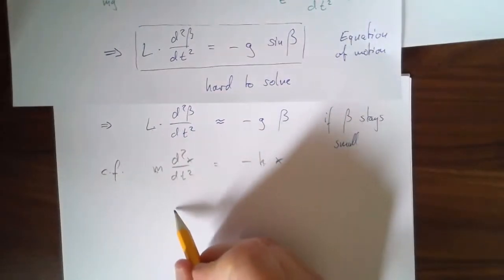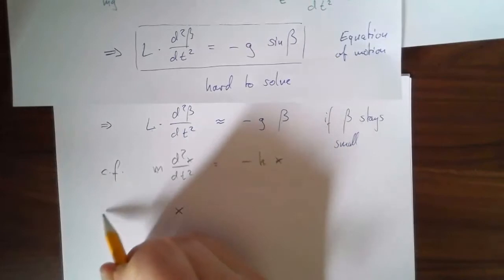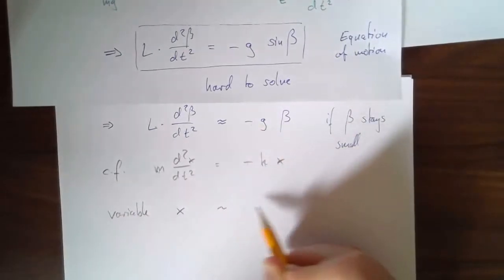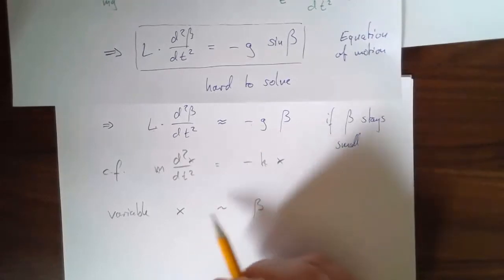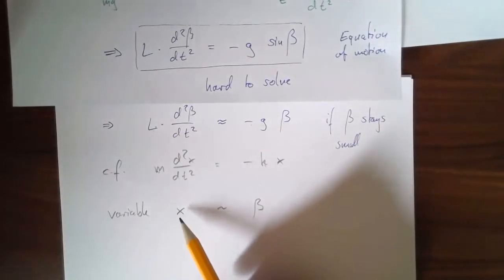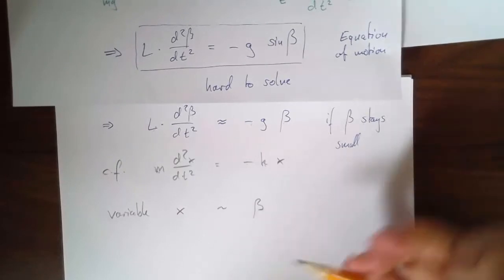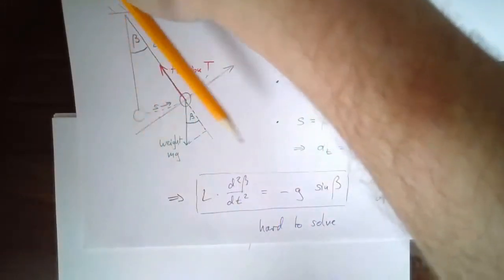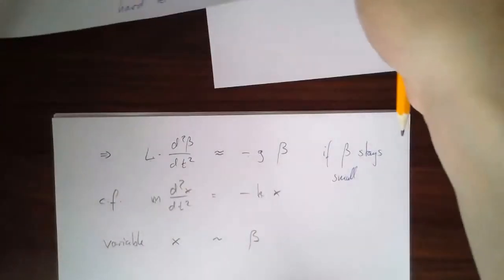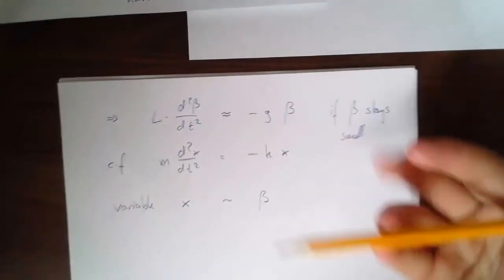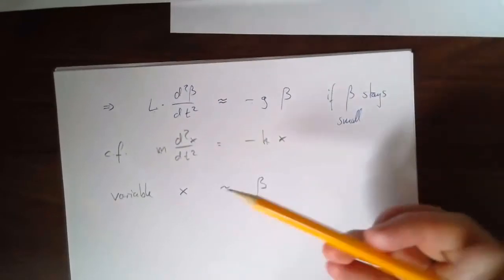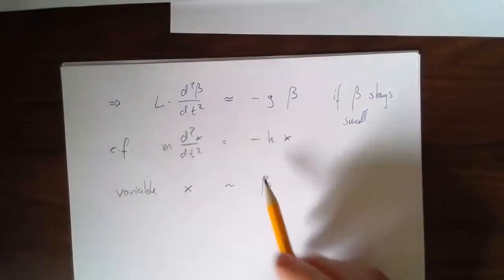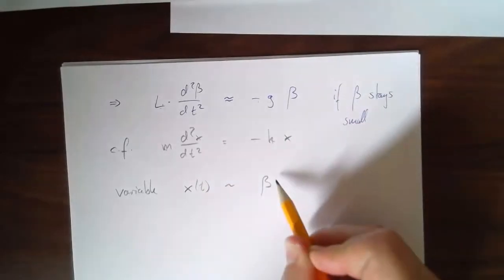So let's write this down. So I essentially have my variable is x in the case of the spring. It's a little bit like beta. They have different meaning. X is a physical displacement in meters. Because beta is a physical displacement too, but it's an angle. But it doesn't matter. The math doesn't care what the symbols mean, what the variables physically mean. The math is still going to be the same when it comes to figuring out what function of time is allowed.